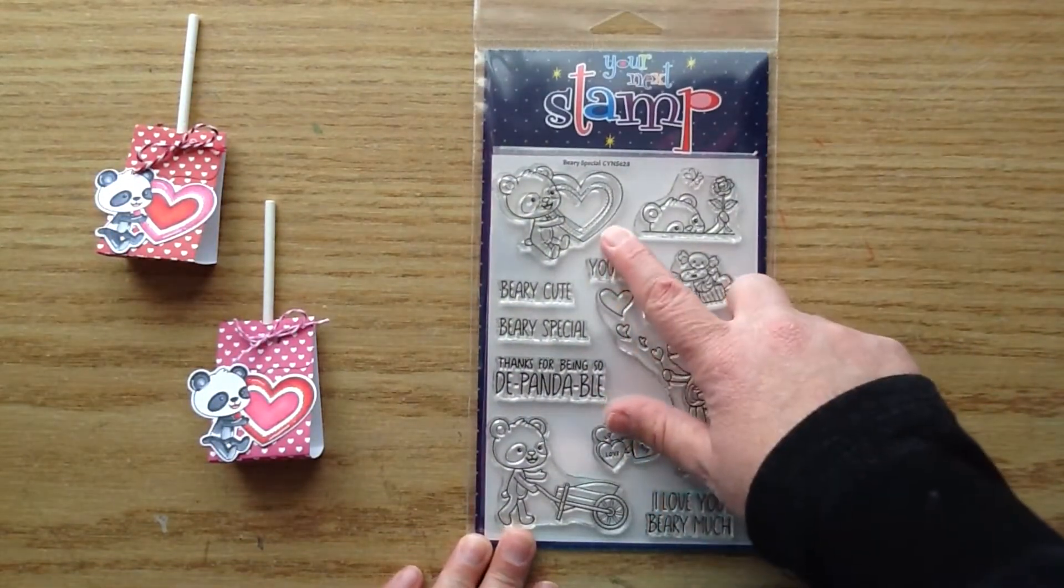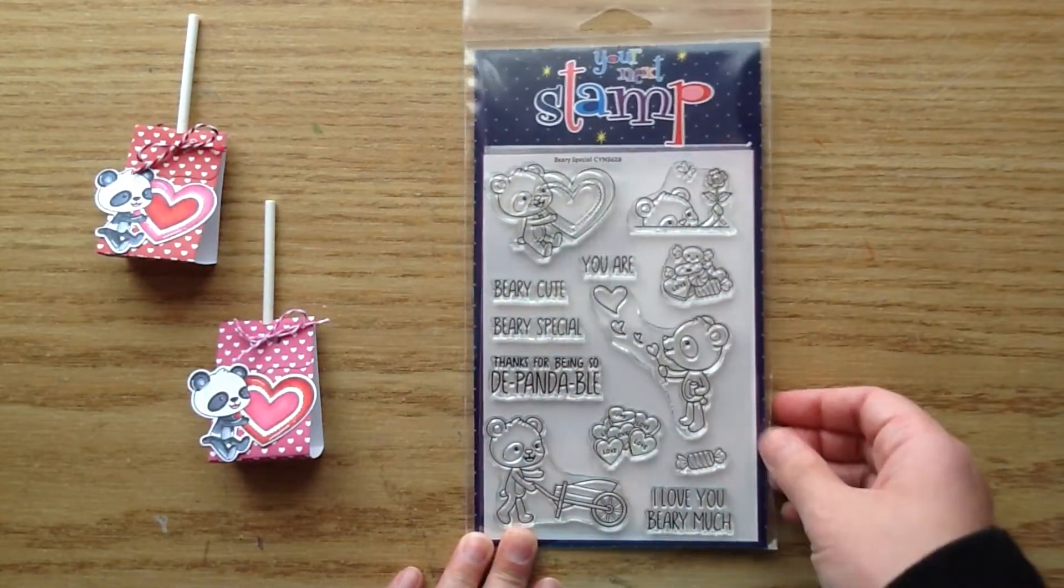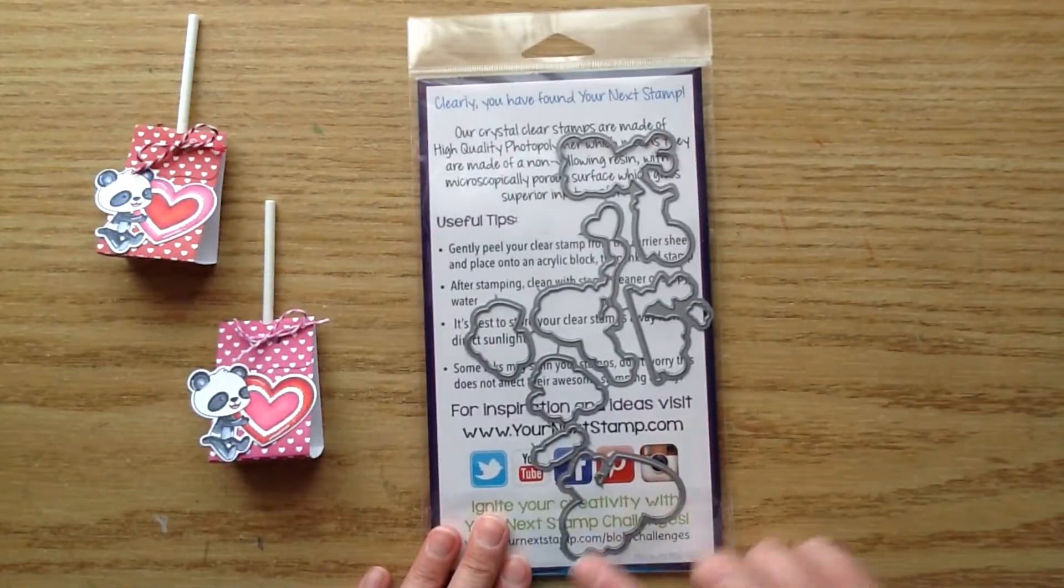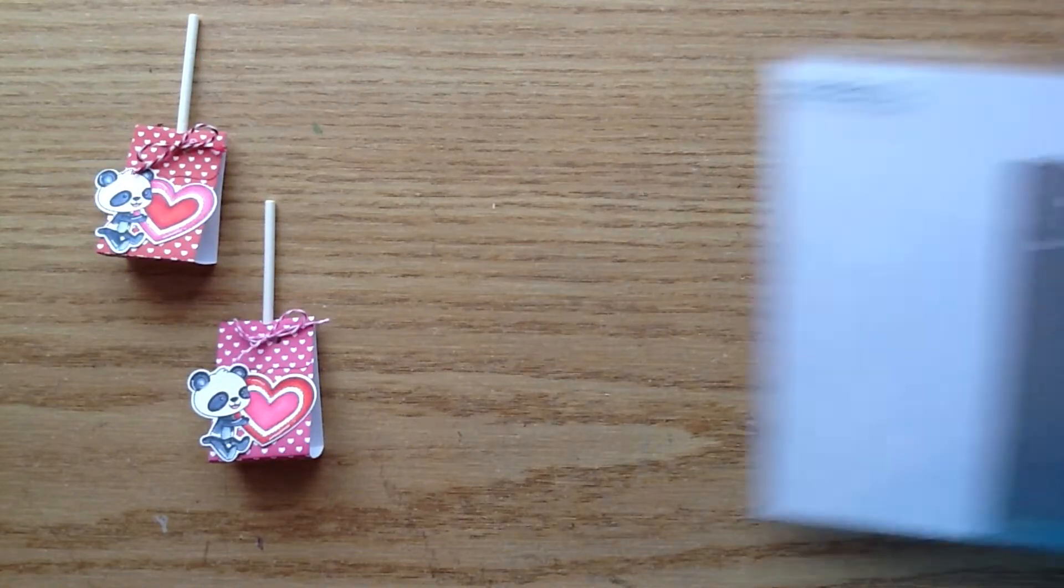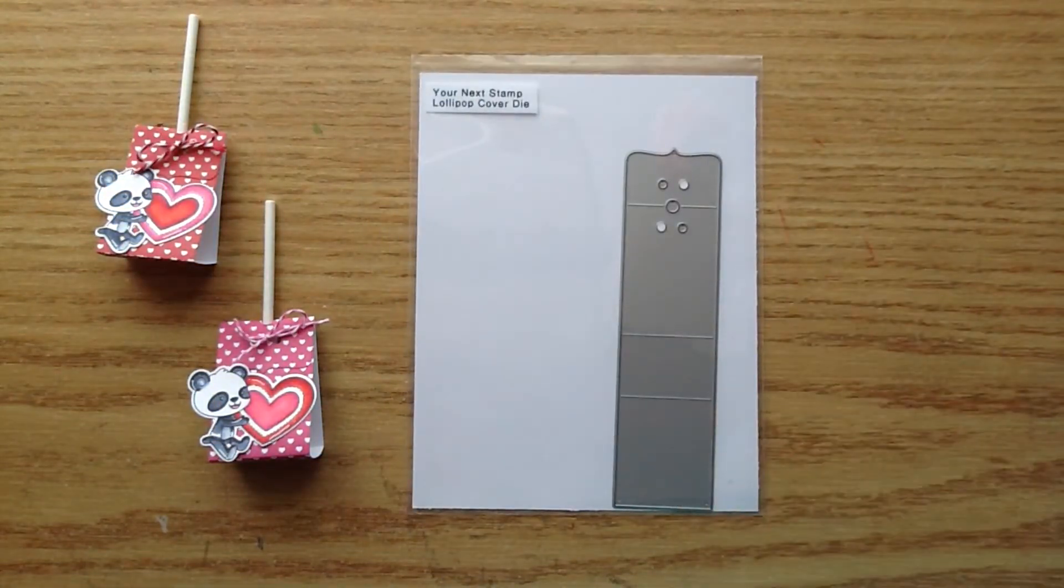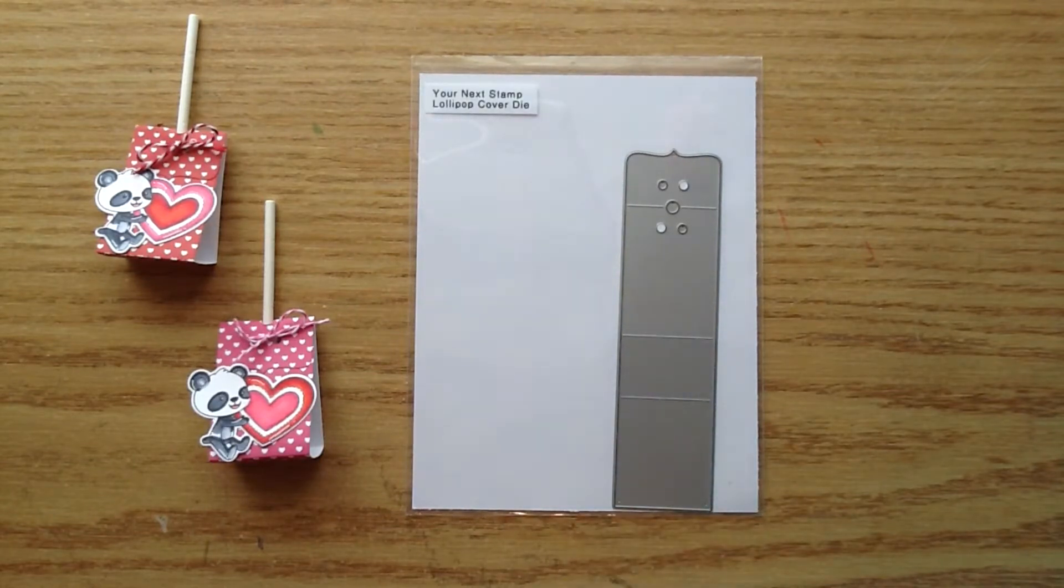I used the new Your Next Stamp Berry Special Stamp Set and I used this adorable little panda there. And then there are also coordinating dies you can purchase separately, so I used that die there. And this is the Your Next Stamp Lollipop Cover Die. And this is a die that I've had from Your Next Stamp for quite some time. It's an older release and I just love this one so much. I have gotten so much use out of it.